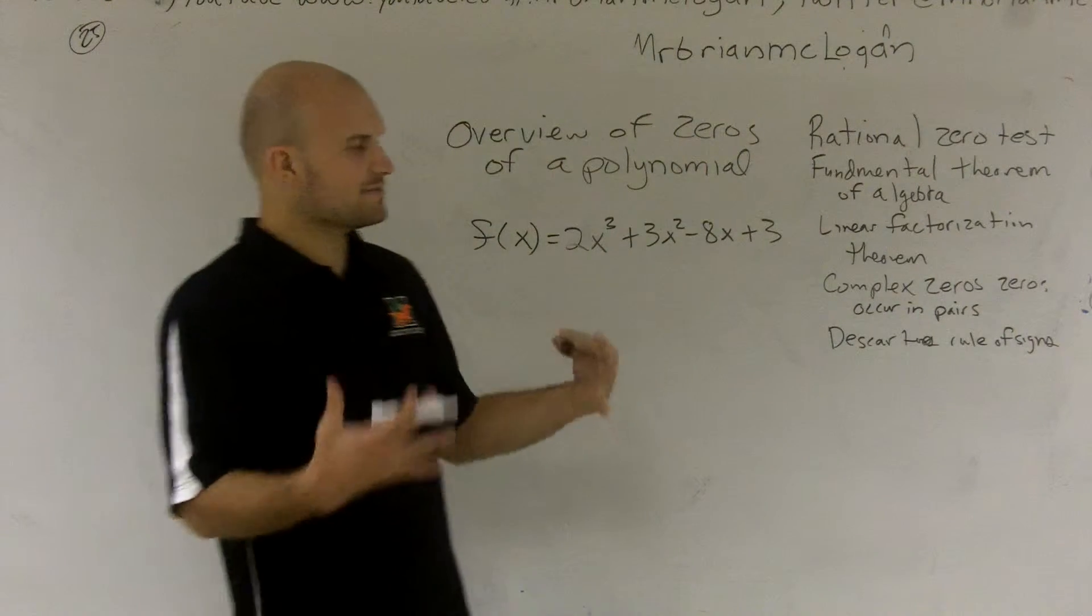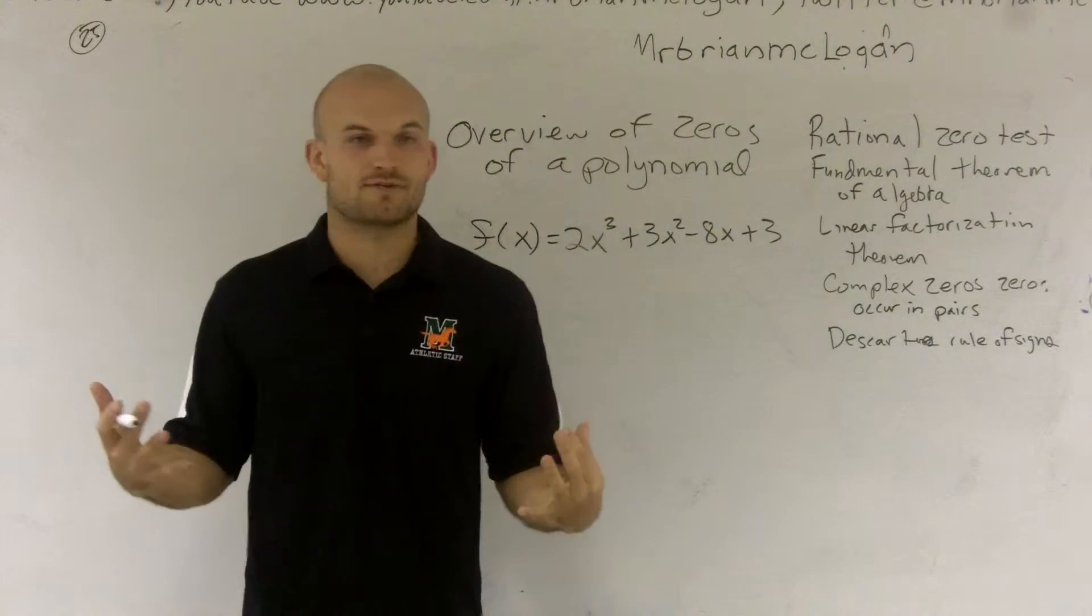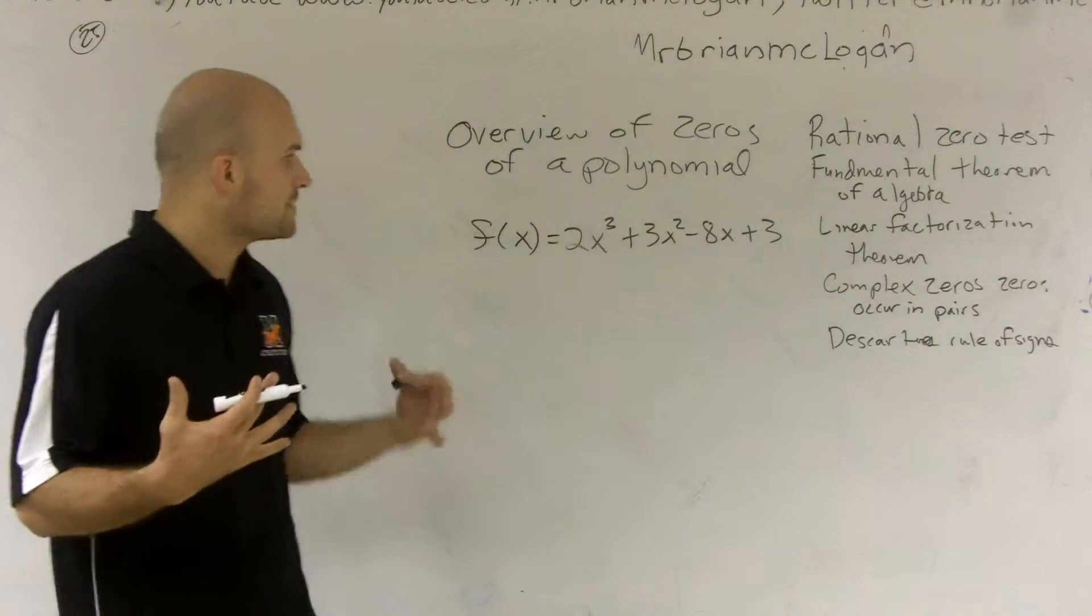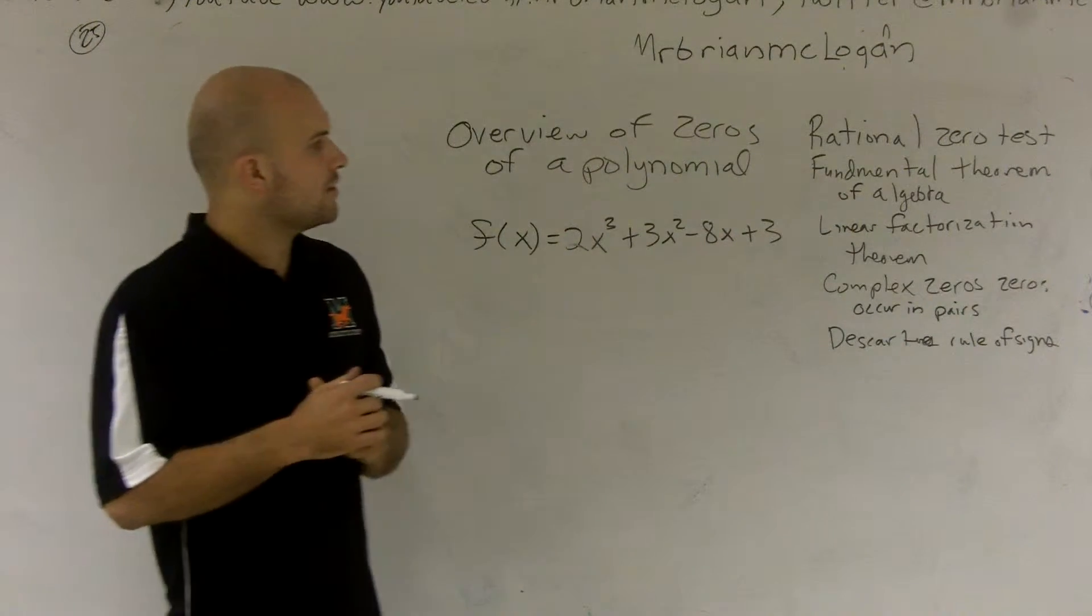There has to be at least one by the Fundamental Theorem of Algebra and at most three. That's some really important stuff you need to understand - every single polynomial, once you're given one, you know there's a factor, and you cannot find more than three.